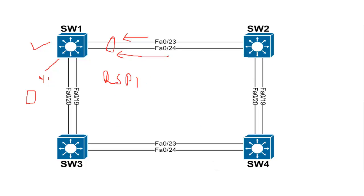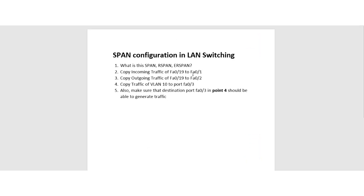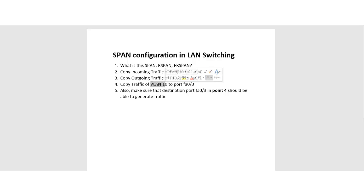Let me take you to the task list. The first task is to copy the incoming traffic of an interface and send it over to destination F0/1. One more thing — you can also copy the traffic of a VLAN as well, apart from interfaces.